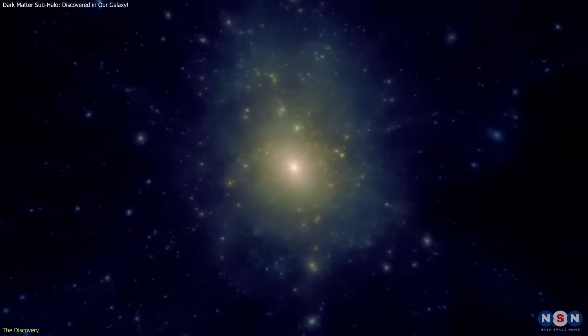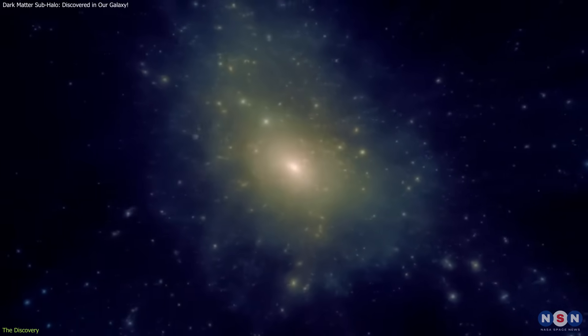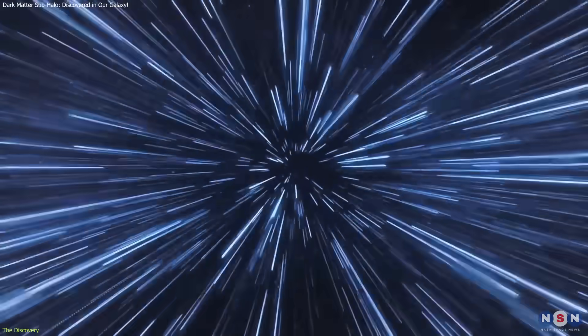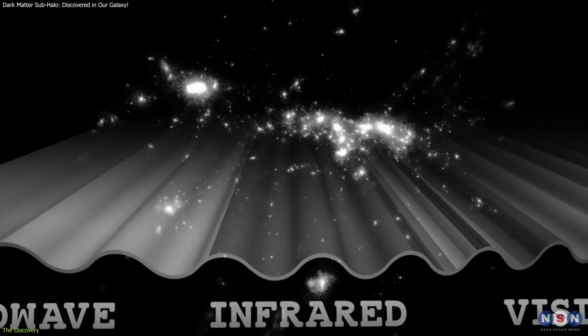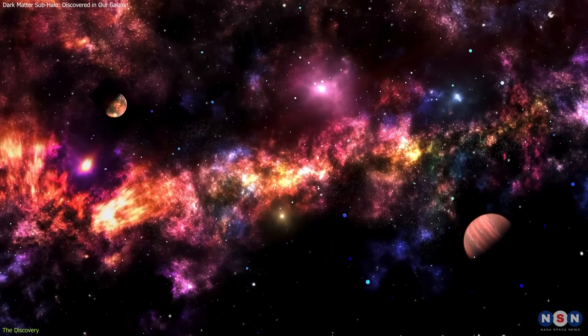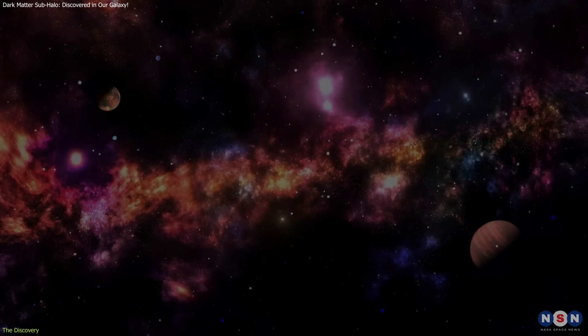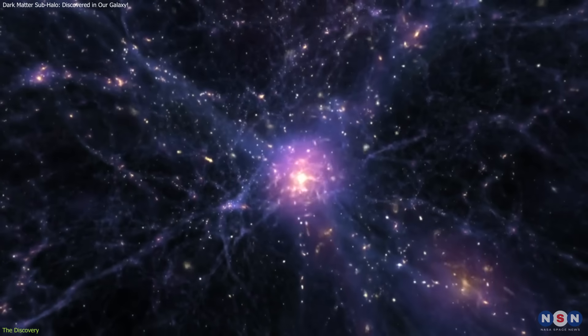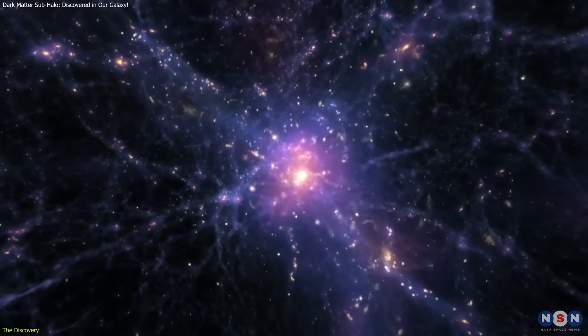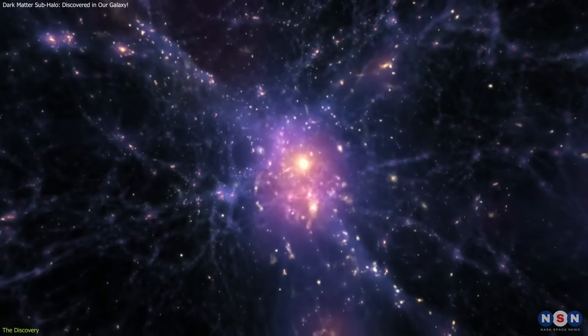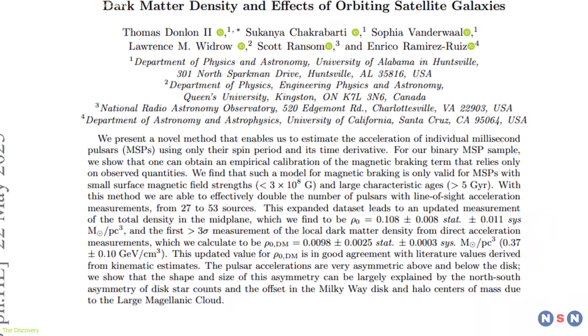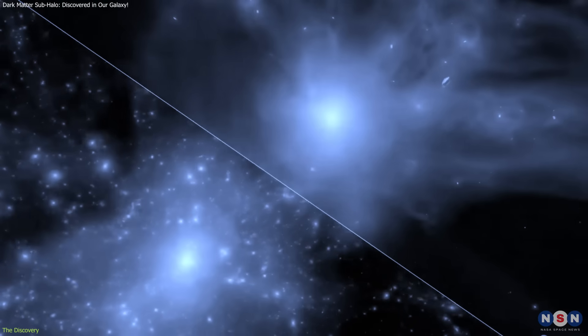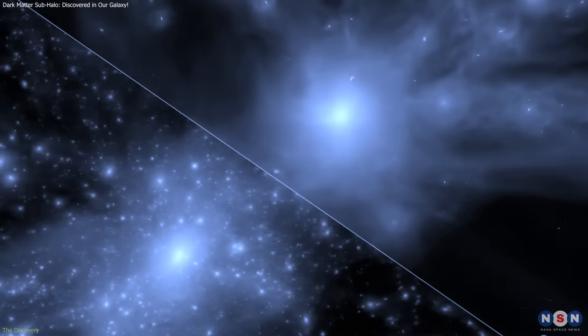Modeling the gravitational pull required something weighing about 24 million suns, located roughly 2,300 light-years away. Such an object is invisible at any wavelength, and far too massive to be explained by ordinary matter. The only explanation that fits is a dark matter sub-halo—a clump of invisible material nested within the Milky Way's larger dark matter halo. This marks the first time a sub-halo has been directly inferred from pulsar data in our galaxy, providing a long-predicted but elusive piece of evidence.